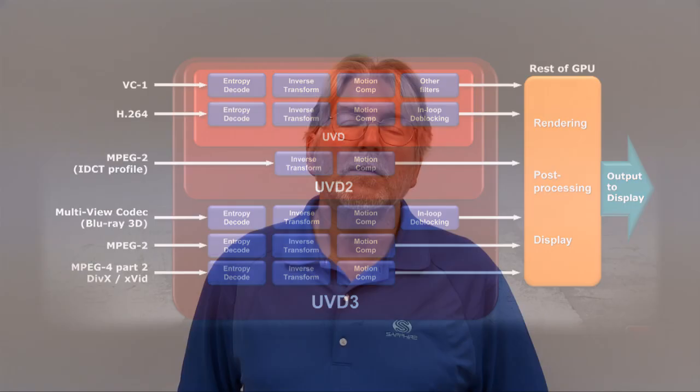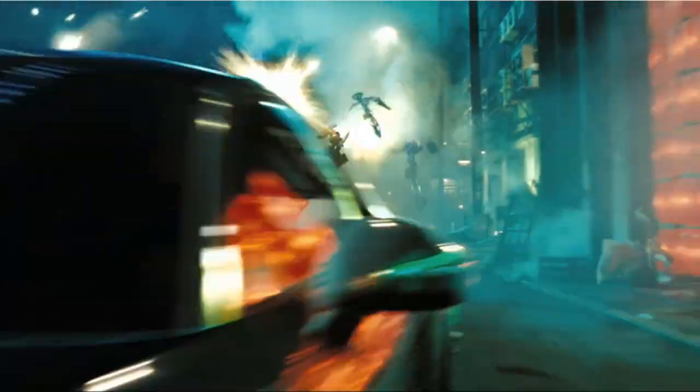This new generation of cards also supports HDMI 1.4a, which is the latest specification and delivers 7.1 audio as well as stereoscopic 3D output to a suitable TV or monitor. Today I'd like to introduce the first two members of the 6000 series.